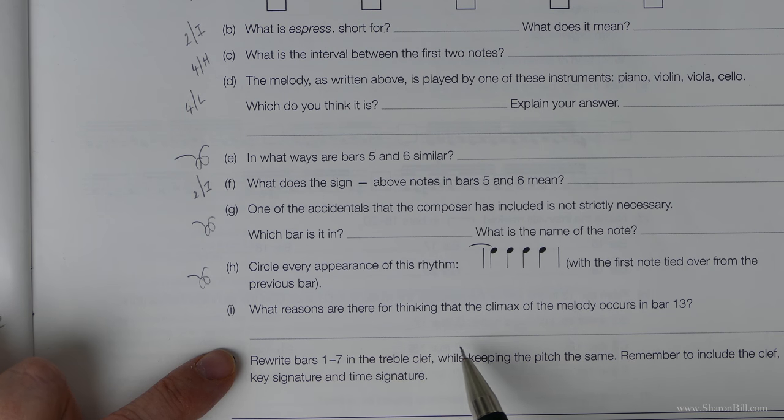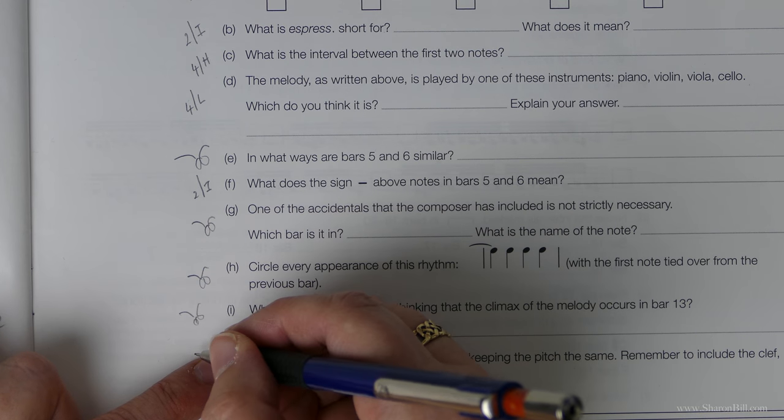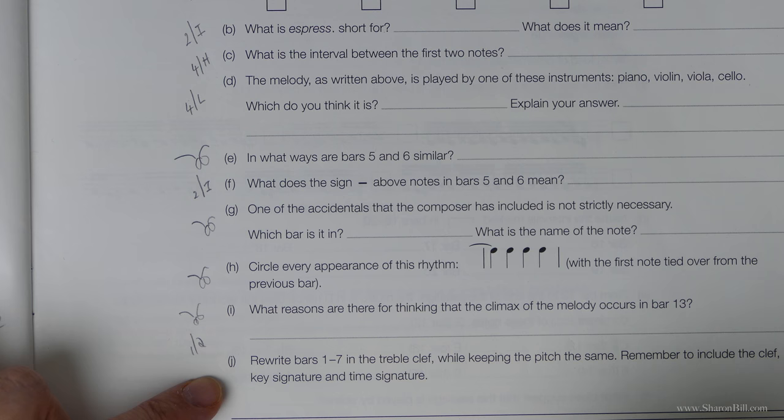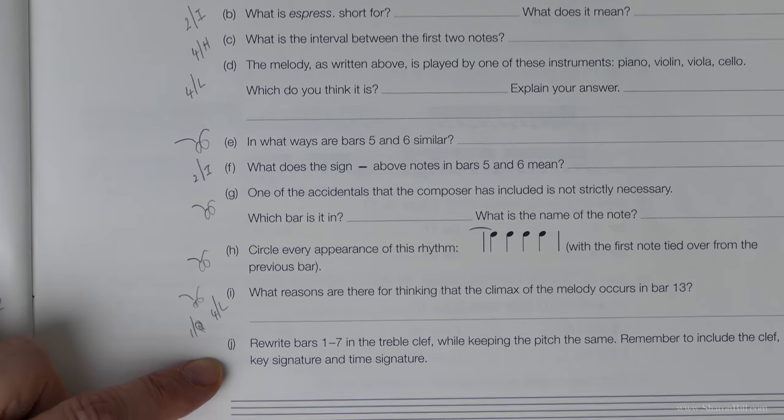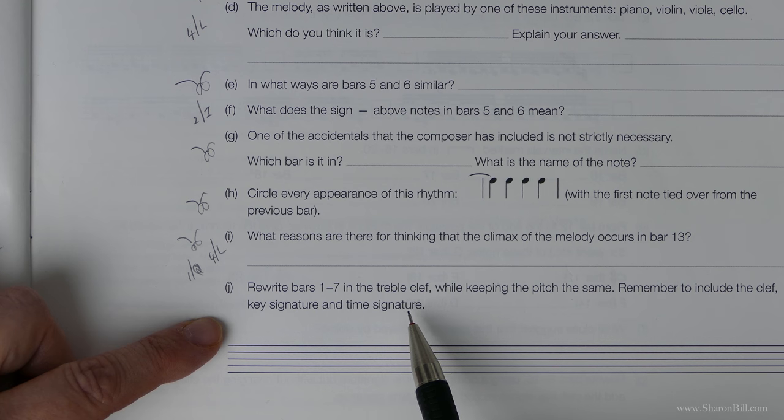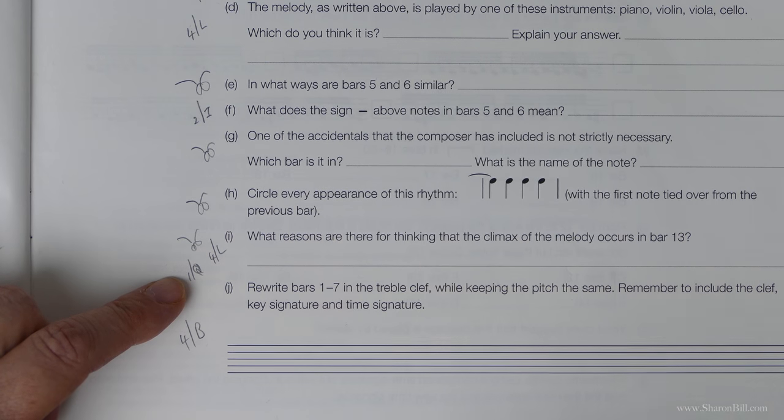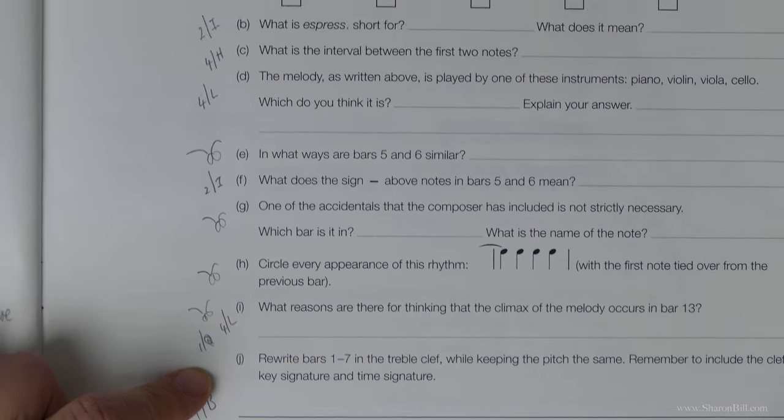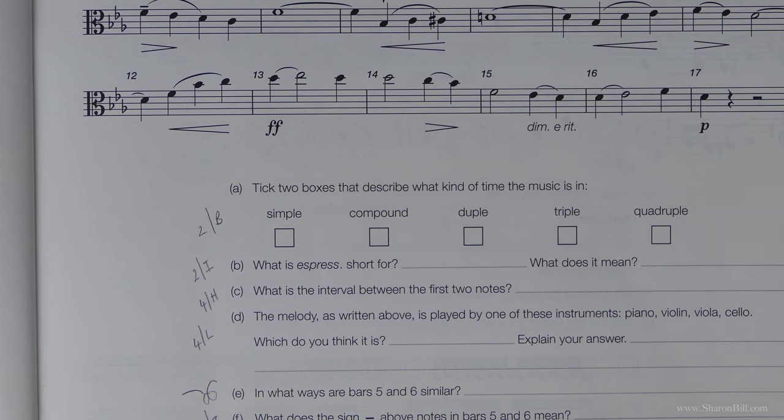What are the reasons for thinking the climax of this melody occurs in bar 13? We need just a little bit of observation looking at the performance directions. Grade 1 Q will give us a clue, and 4L. Rewrite bars 1 to 7 in the treble clef while keeping the pitch the same. That's going to be grade 4B to help you there. Have a go at that and then re-access the video and we'll work through this together.